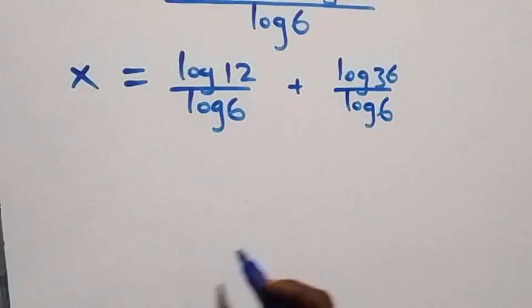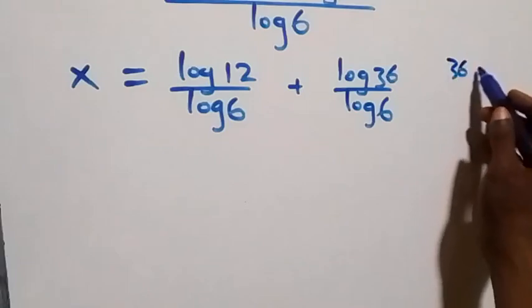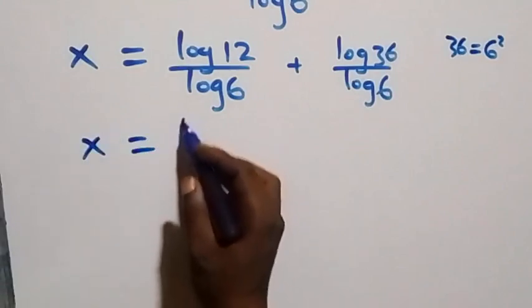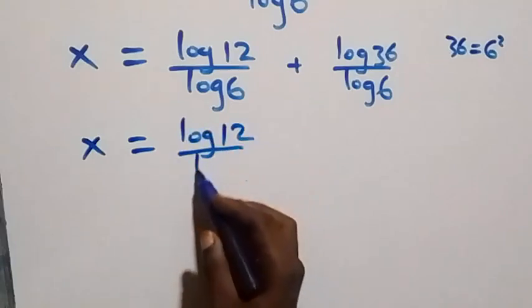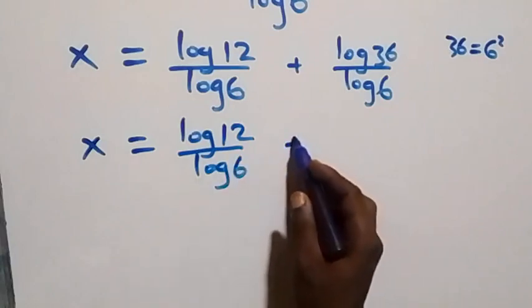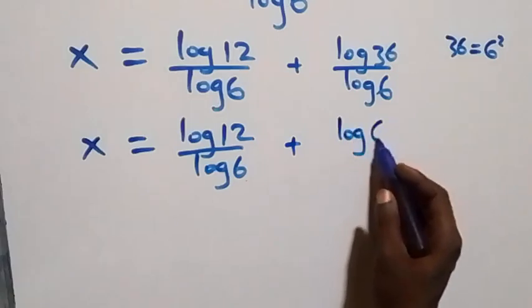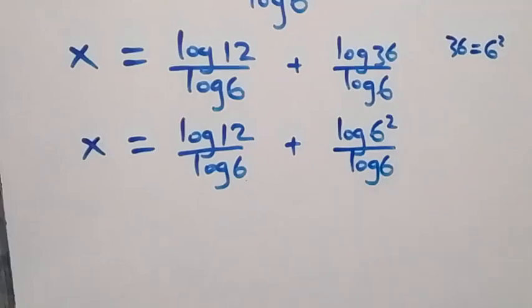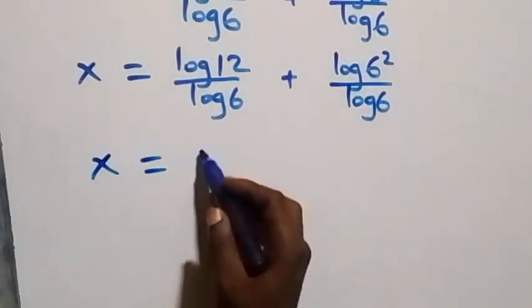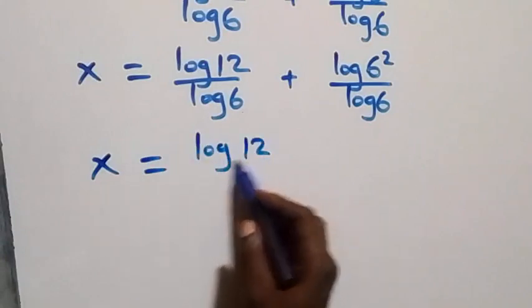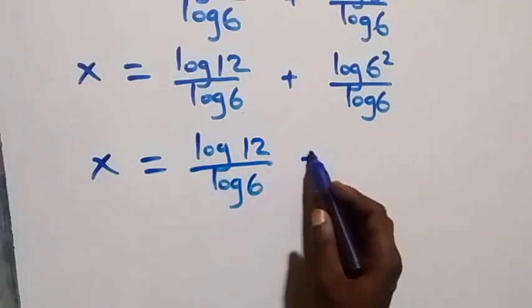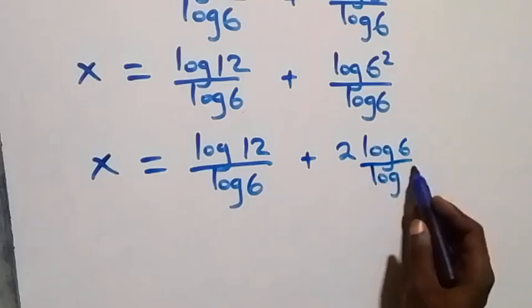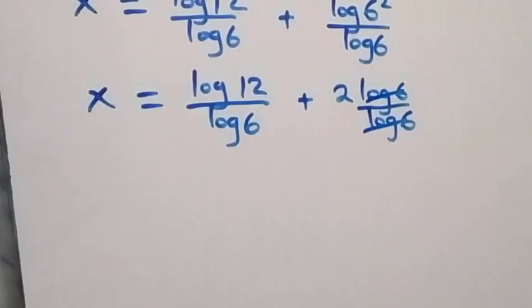Now let's express 36 as 6 squared. So we have x equals log 12 over log 6, plus log of 6 squared over log 6. Applying the power law, this becomes log 12 over log 6, plus 2 log 6 over log 6. The log 6 terms cancel, leaving 2.